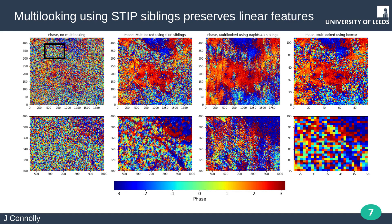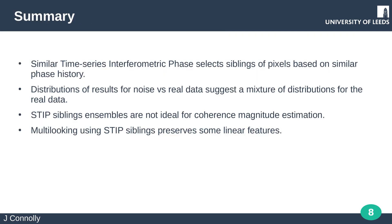We can also use the STIP siblings to multi-look our interferograms. Here we compare it with using RapidSAR siblings and the standard boxcar approach. The bottom set of figures of the area are defined by the black box in the top left figure. The boxcar approach uses 4 looks in azimuth and 20 looks in range. In the case of using STIP siblings for multi-looking, some linear features are preserved versus other methods.